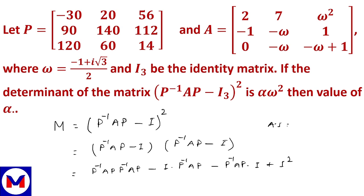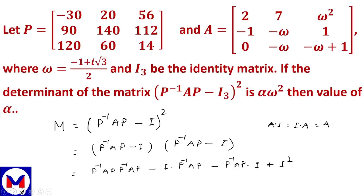Now, A into I equals I into A equals A. So the relation for M squared becomes: the two middle terms simplify using P into P inverse equals I, giving A into A equals A squared. Therefore M equals P⁻¹A²P minus twice P⁻¹AP plus I.